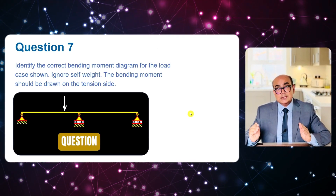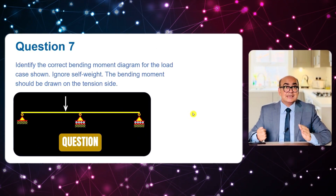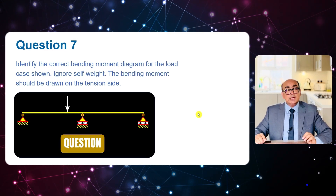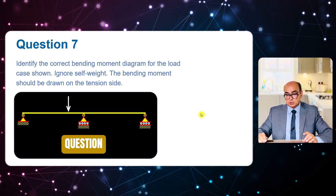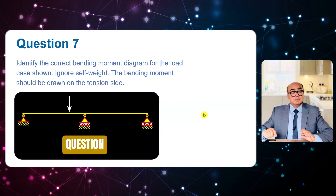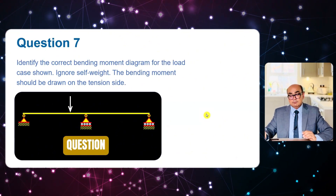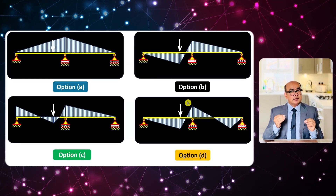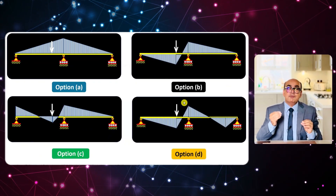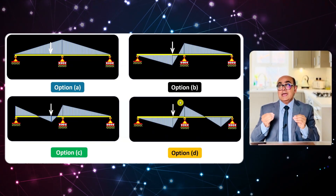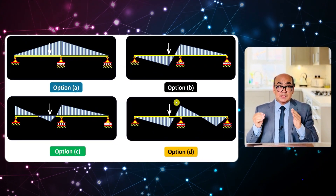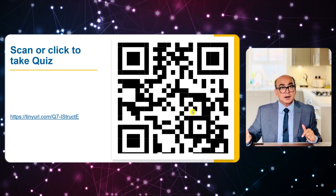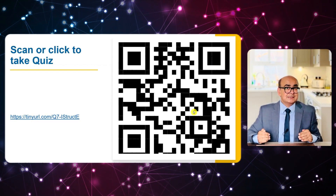I will solve two problems here, and there will be four options — you can have a go at these problems before watching. We have a beam where we have to sketch the bending moment diagram for the load shown. On the left side we have a pin support, in the middle a roller, and at the end a roller support. You can pause this video now and take the quiz via the link or barcode shown.